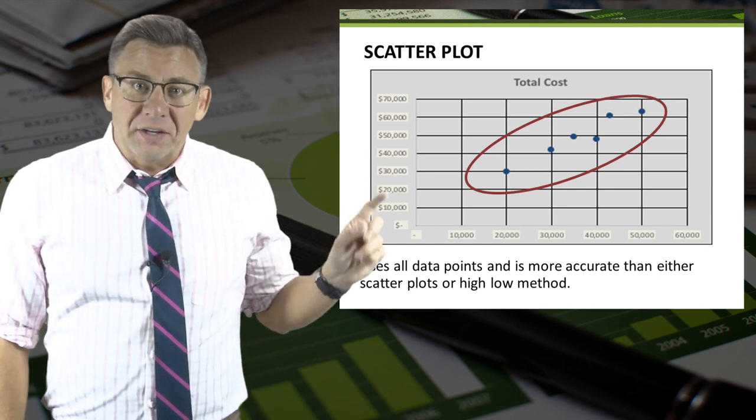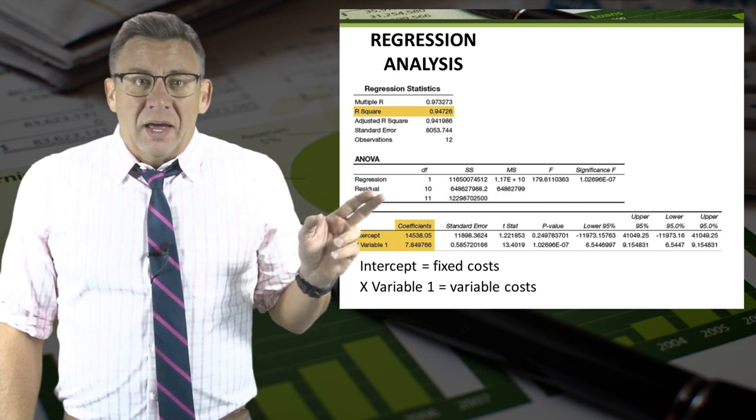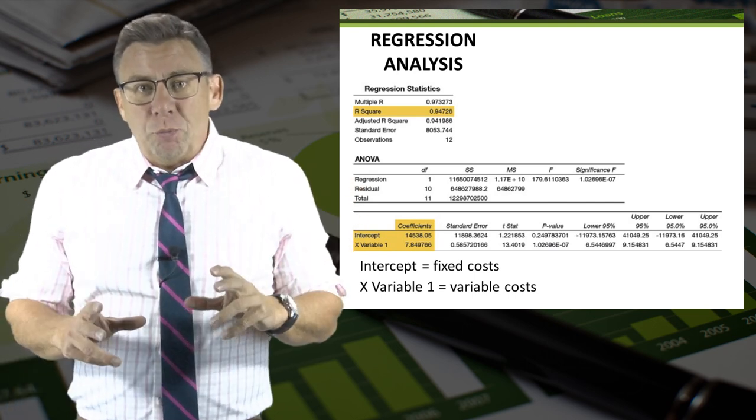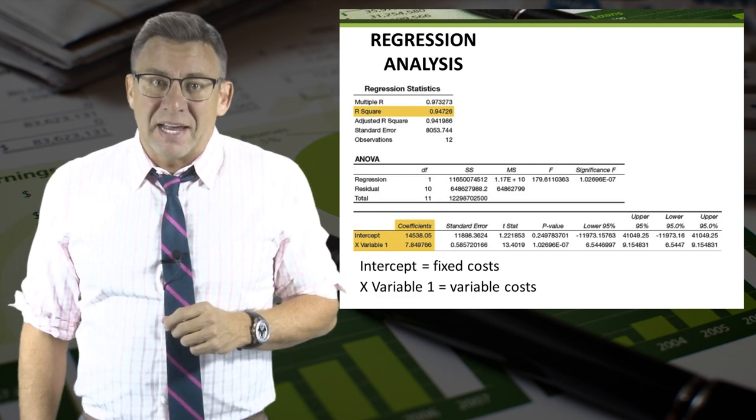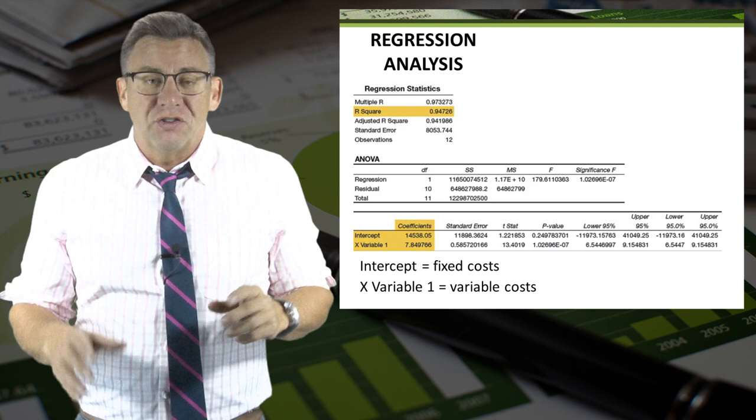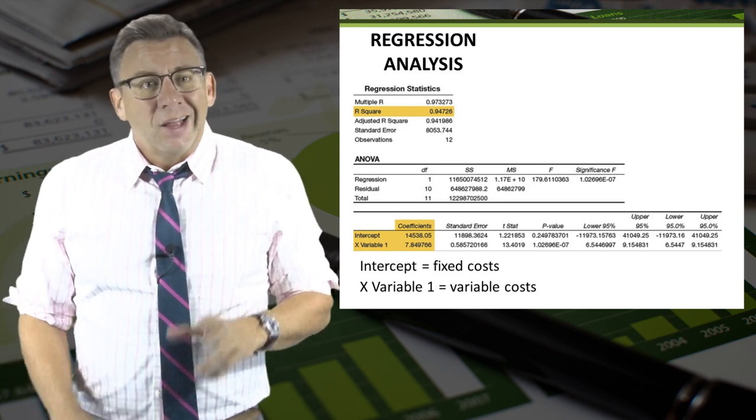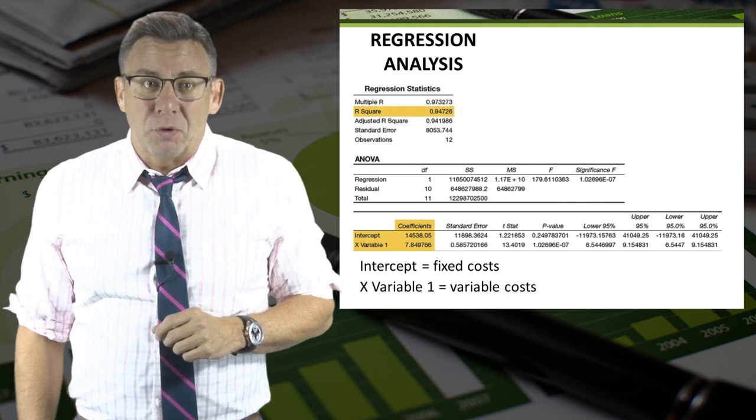So all of the data points on a scatter plot would be used. This is an example of an output report you would get when you perform regression analysis in Excel. By the way, this is not from the same data set used in the high-low example. You can see some of the highlighted items on the output report.